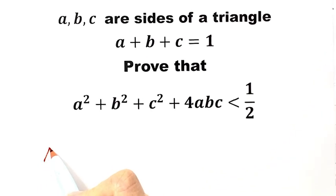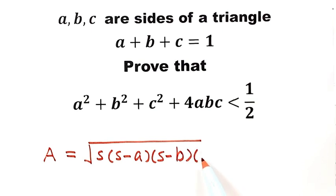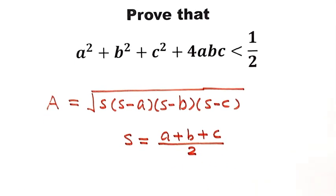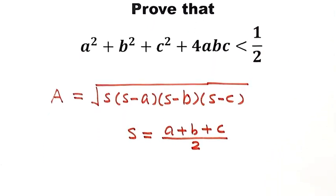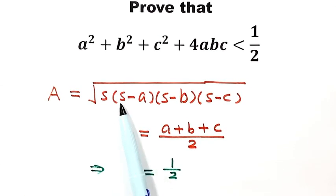Here A is for the area of a triangle, and it equals the square root of S times (S minus A) times (S minus B) times (S minus C), where S equals (A plus B plus C) divided by 2. Because we are given A plus B plus C equals 1, we have S equals 1 half. So we can use 1 half to replace all the S's in the formula.